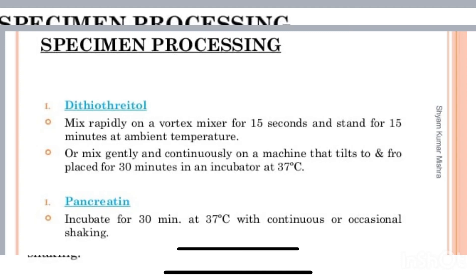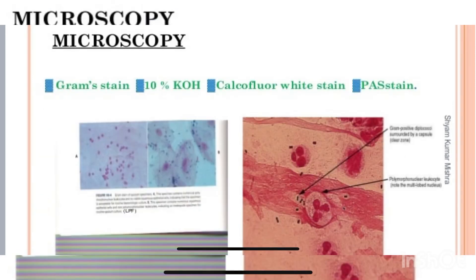For identification after sample collection and transportation, gram stain, 10% KOH, calcofluor white stain, and PAS stain are used. Under microscopy, gram-positive diplococci surrounded by a capsule and polymorphonuclear leukocytes are seen, indicating the presence of infection inside the lungs.